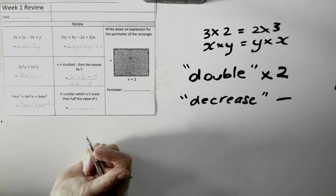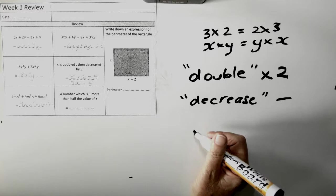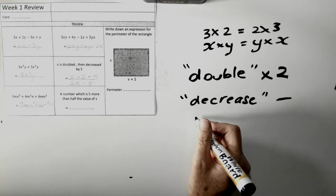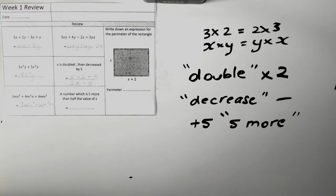A number which is five more. If I was to think that I might get five more dogs, that would mean that I've already had two. I'd be up to seven. Therefore, five more actually means plus five is the same as five more. So, a number which is five more than half the value of X. Half.